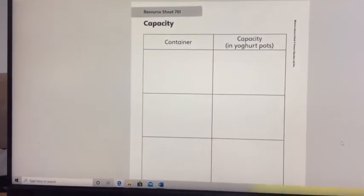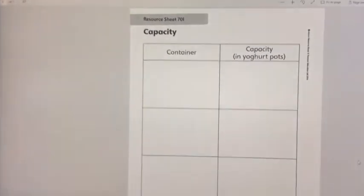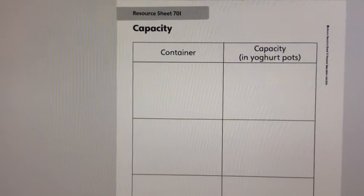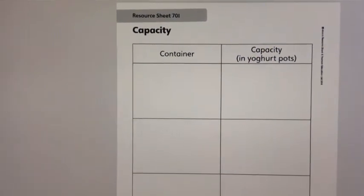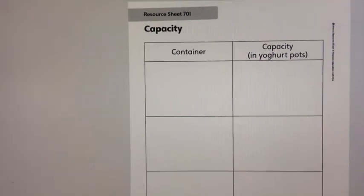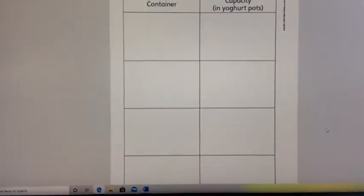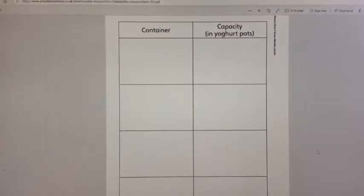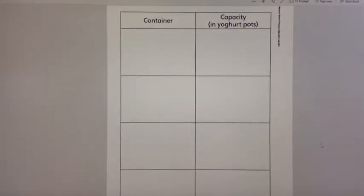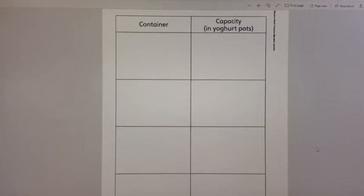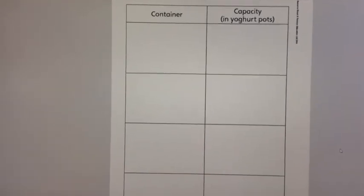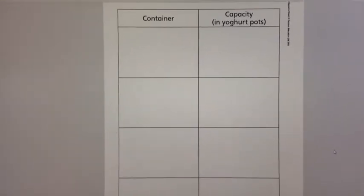Once you've finished marking off your pop bottle, have a look at this sheet. It's in the emergency folder but it should also be in your pack. You need to choose 4 containers, fill them full of water, pour each one into your pop bottle, and see how many yoghurt pots full it held. Try to use containers of different shapes and different sizes.